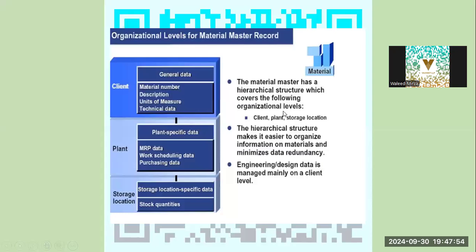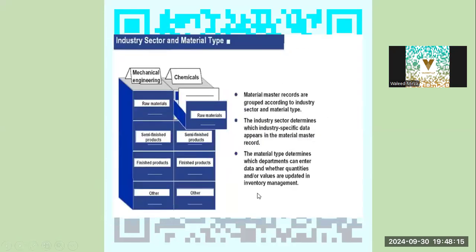Material master is what you create in SAP as raw material, semi-finished good, and finished good. These are organized into segments. The client has material number and description, the plant has MRP data, and storage location has stock quantities.